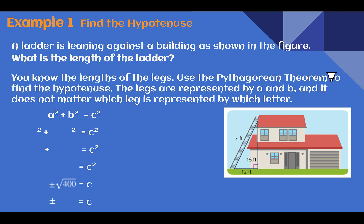Example 1. Find the hypotenuse. A ladder is leaning against the building as shown in the figure. What is the length of the ladder? First, we know the lengths of the legs, so we can see leg here, leg here, here's our right angle. We're trying to find our hypotenuse.